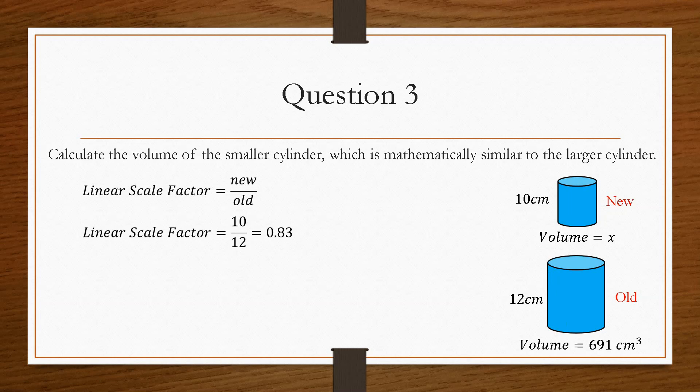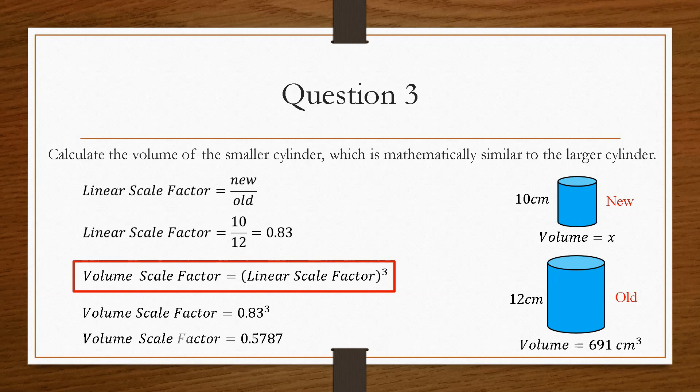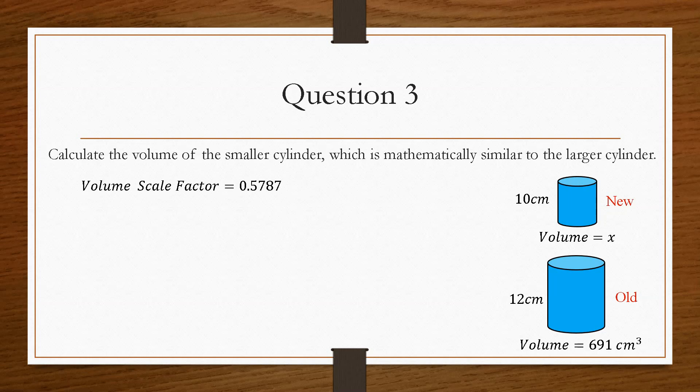However, just like the area scale factor, the volumetric scale factor is the linear scale factor cubed, because it's centimetres cubed, we have to cube the linear scale factor. So our volumetric scale factor becomes 0.5787. And then the process is exactly the same to find volume x, because we take volume x is equal to the volumetric scale factor multiplied by the old volume, which in this case is 691. So we do 0.5787 times 691, and when we round it up, we get a volume of 400 centimetres cubed.